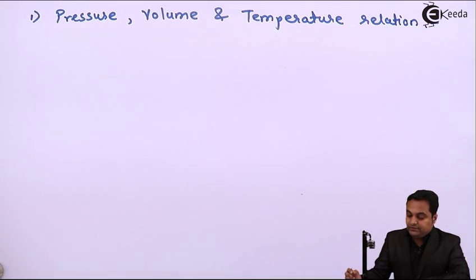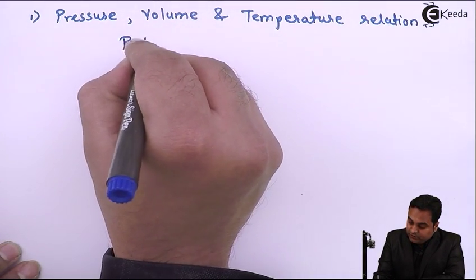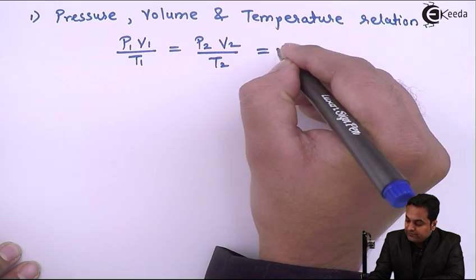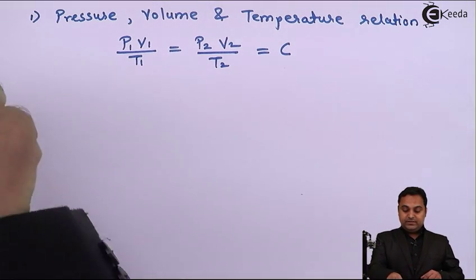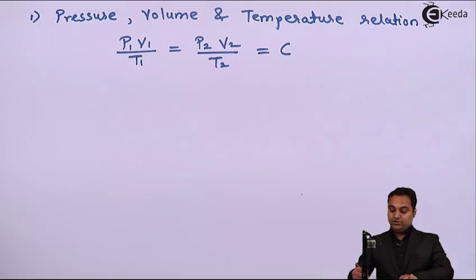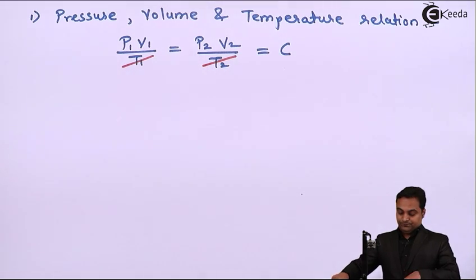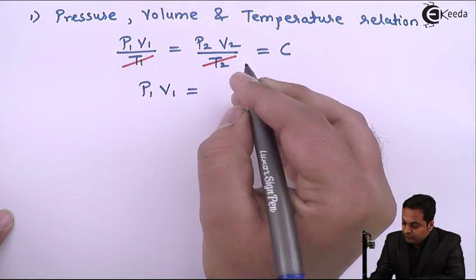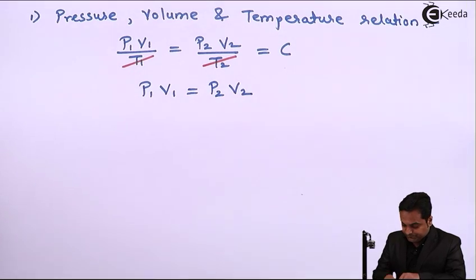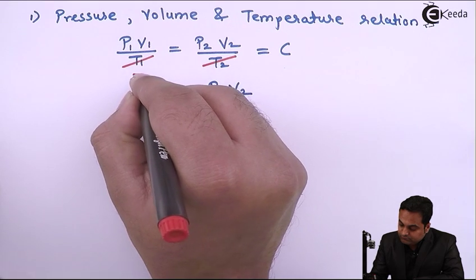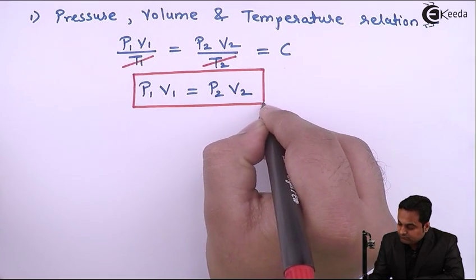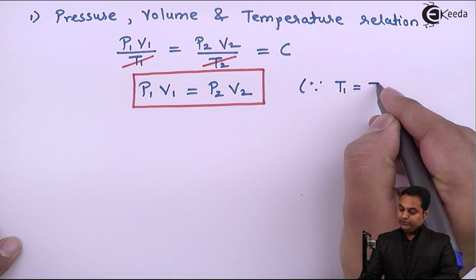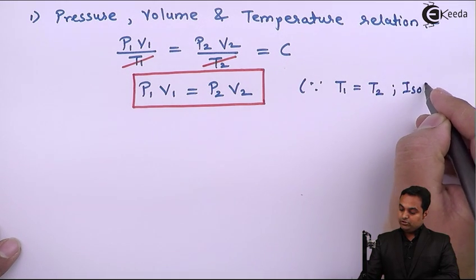We can write the general gas relation: P1V1/T1 = P2V2/T2 = constant C. Since the process is isothermal, T1 equals T2, so we can cancel the temperatures. The resulting relation is P1V1 = P2V2, which holds because T1 = T2 for a constant temperature process.